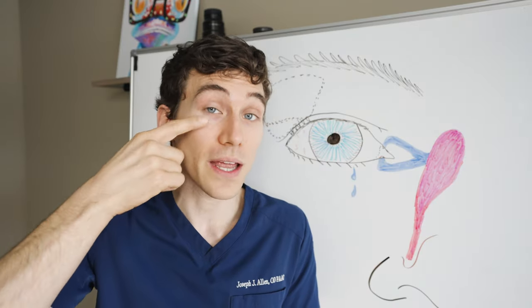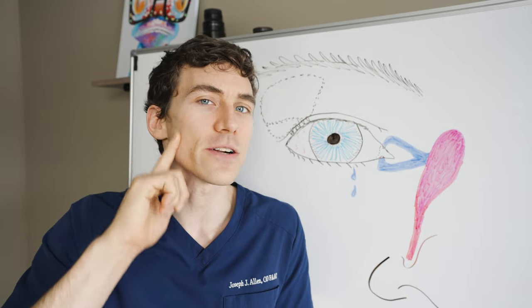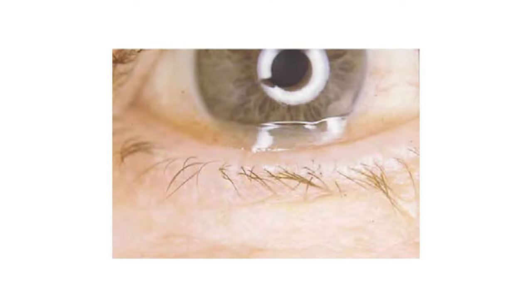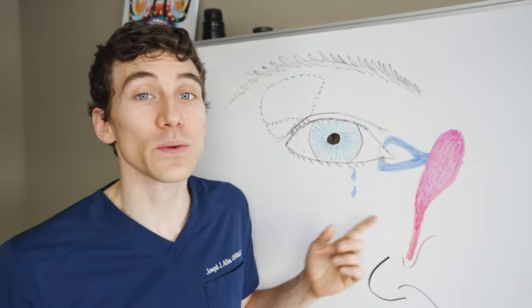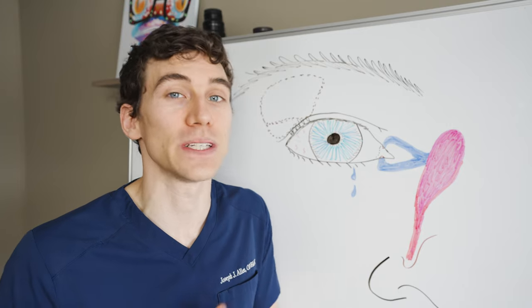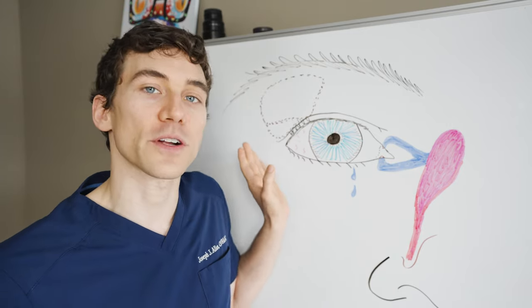A lot of times you can tell this just by looking at somebody because the tears aren't flowing here by the nose. Instead, the tears are kind of flowing here by the side of their face. Again, because the tears aren't even allowed to flow toward the nose, they're just kind of hitting that conge and then flowing out.